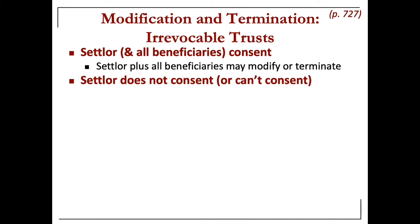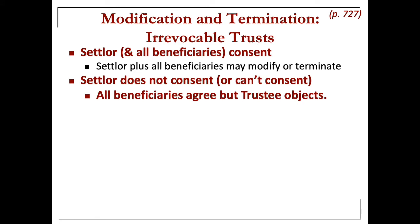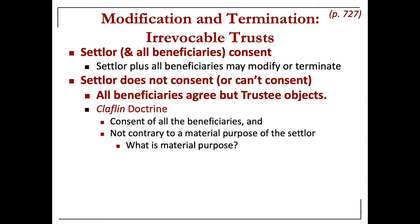What if the settlor doesn't consent — or can't consent — but all the beneficiaries agree and the trustee objects? Under the common law, courts would apply the Claflin doctrine. The Claflin doctrine says that if there is consent of all of the beneficiaries and the modification is not contrary to the material purpose of the settlor, then a modification or termination is allowed.